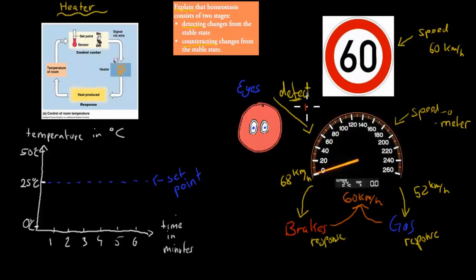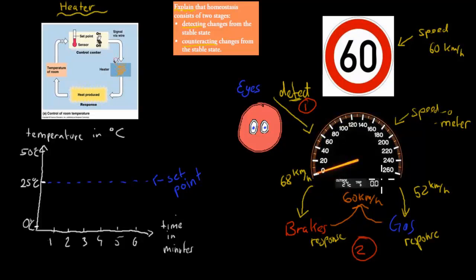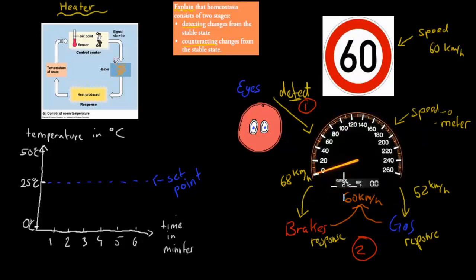So we have the two different steps: detection and response. These two help us to get things at that stable constant speed. In this case, the speed — in other cases, other things. But without detection and response, it wouldn't happen.